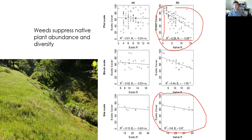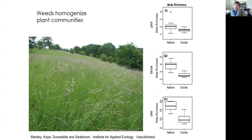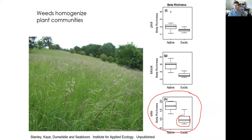Another way to look at this: species turnover from site to site is higher for natives and lower for exotics. Weeds homogenize plant communities both within and between sites. Beta diversity — species turnover from site to site — is much lower for exotics than for natives. Species turnover from location to location has also been associated with ecosystem function; the diversity of plants from place to place affects bird diversity as well.